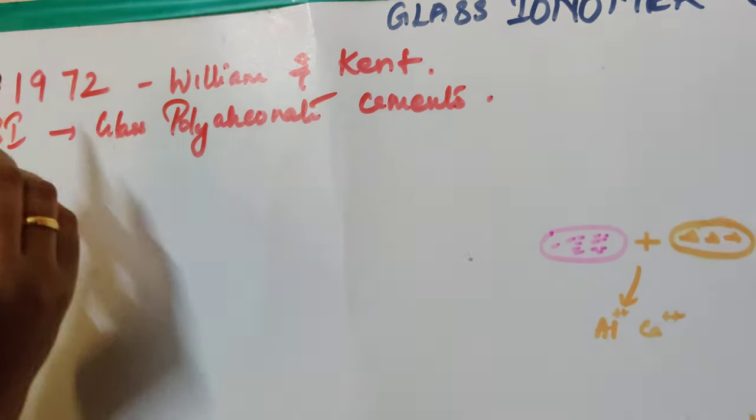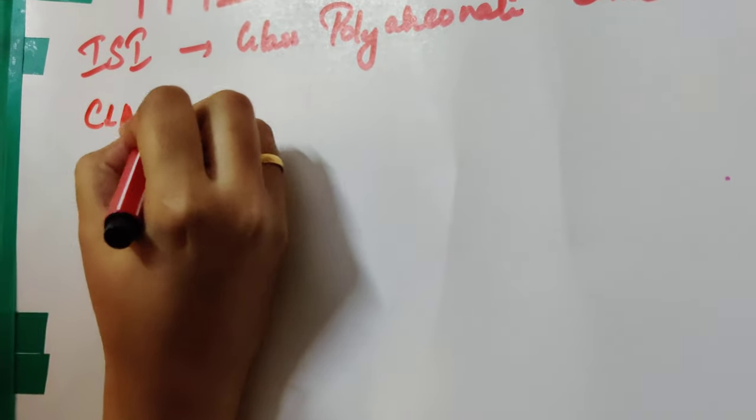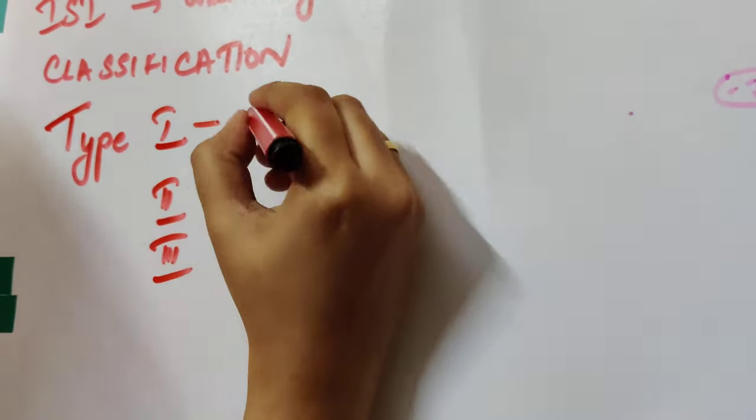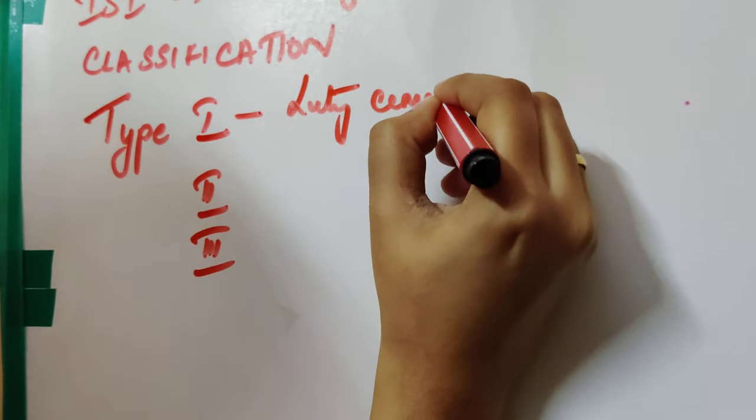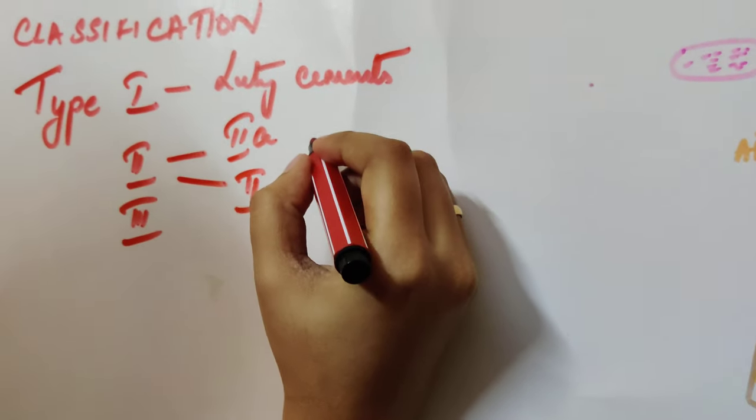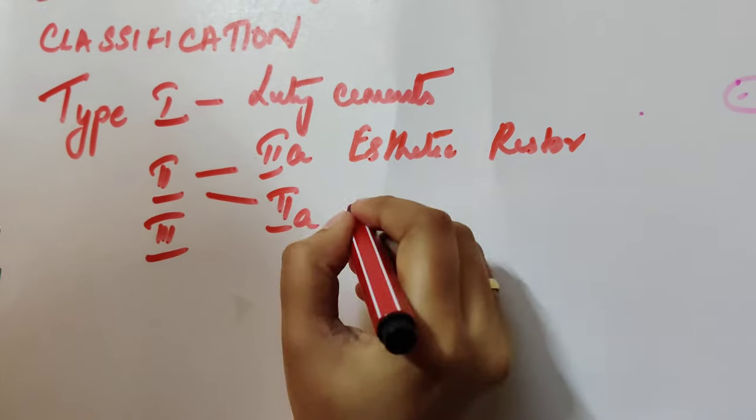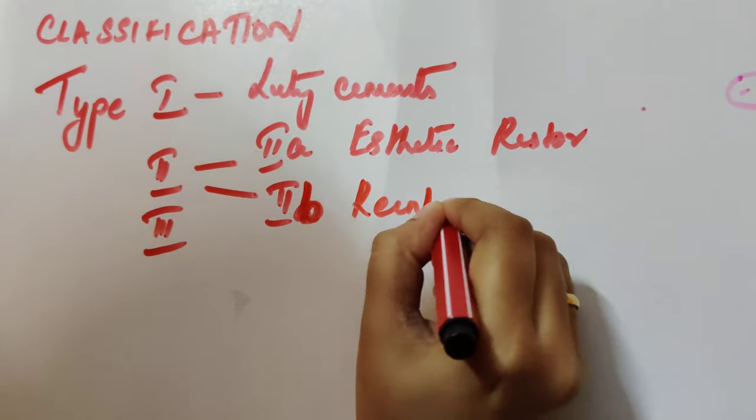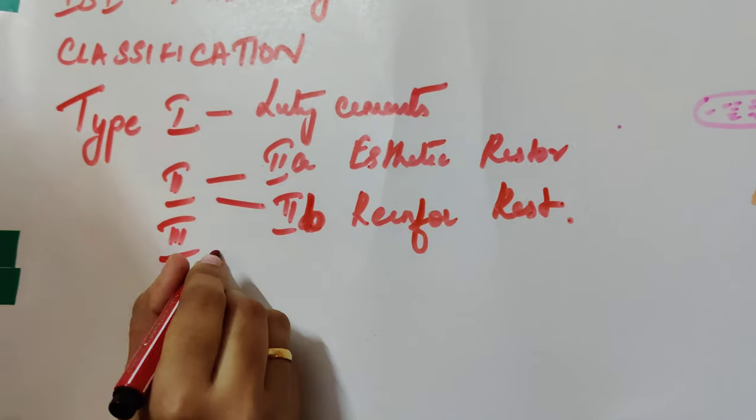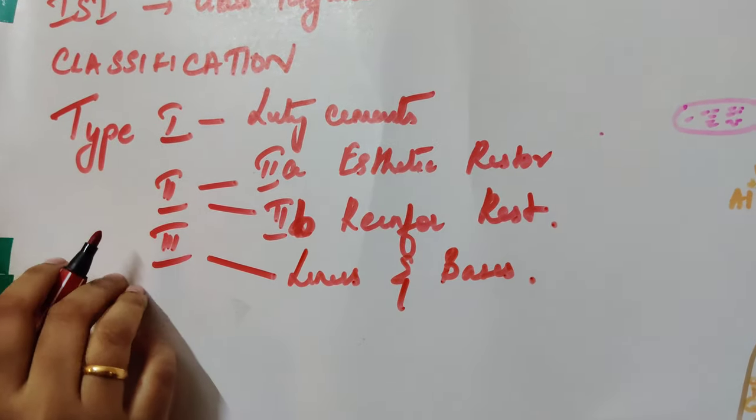Once we have seen about the discovery, let's see about the classification. They have Type 1, 2, and 3. Type 1 is nothing but luting cements. Type 2 can be further divided into 2a and 2b - these are restorative cements. 2a is aesthetic restorative cements and 2b is reinforced restorative cements. Type 3 would be liners and bases.